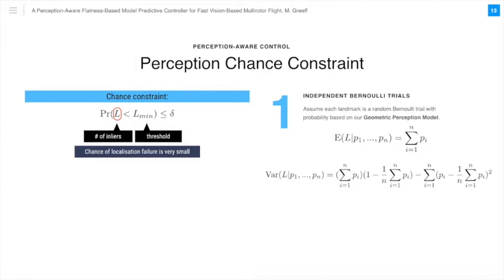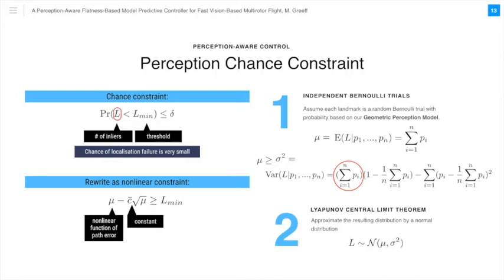We use Lyapunov central limit theorem as motivation to approximate the resulting distribution by a normal distribution with mean and variance given by the expressions above. Using the fact that our mean is an upper bound for the variance in this case, we can rewrite the chance constraint as a non-linear constraint on the position of our UAV, where C̄ is a constant based on the parameter delta.